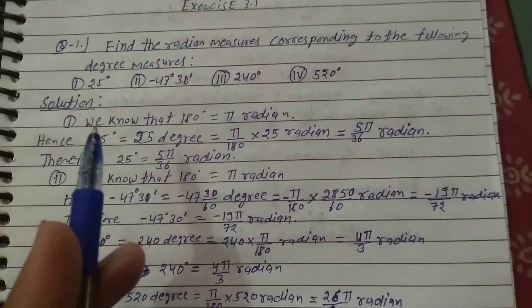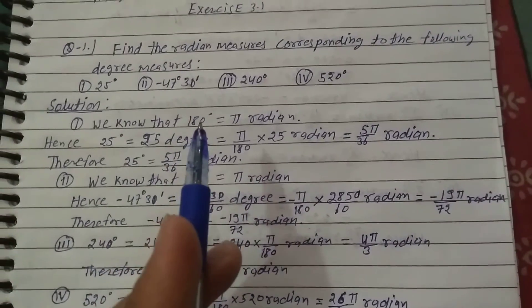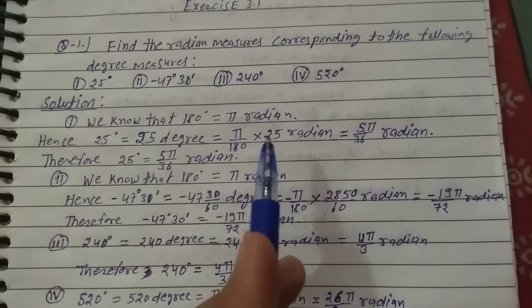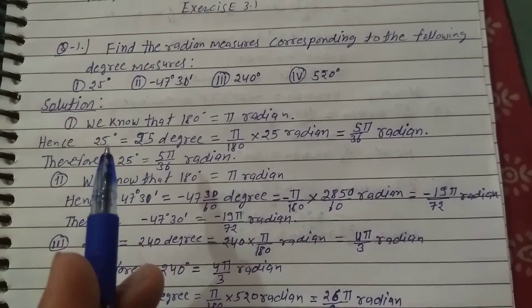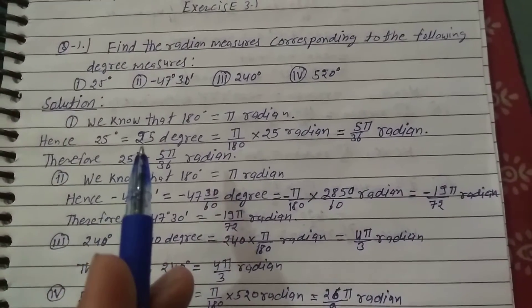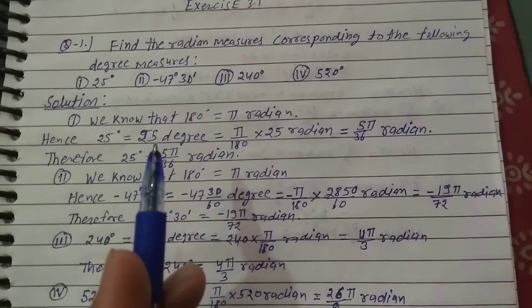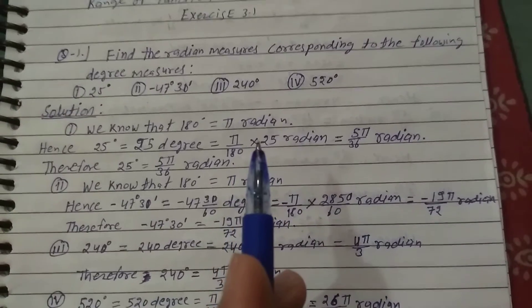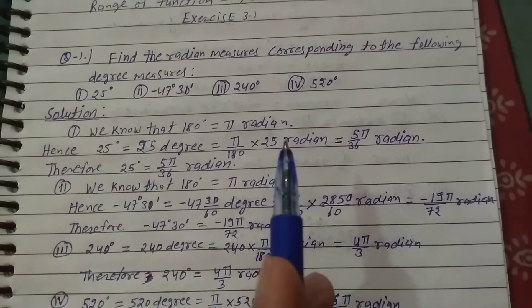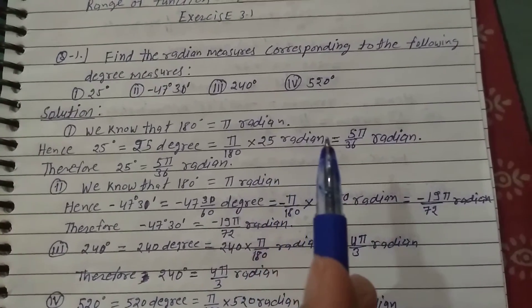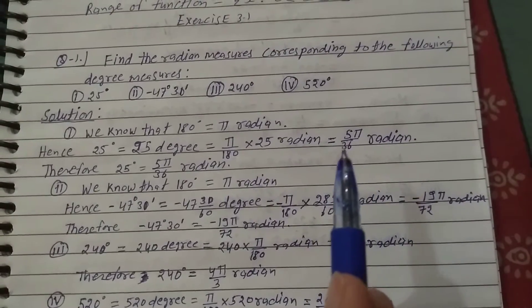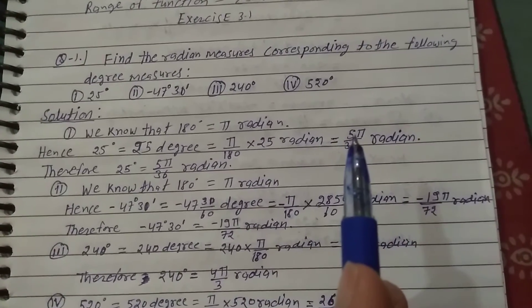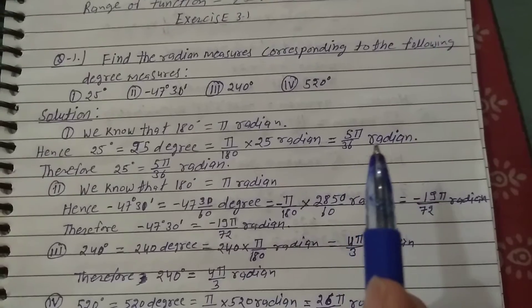Solution: First, we know that 180 degrees equals π radians. Hence, 25 degrees equals π/180 × 25 radians, which equals 5π/36 radians.